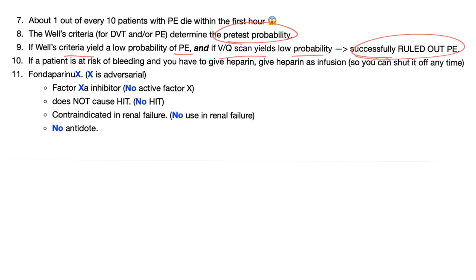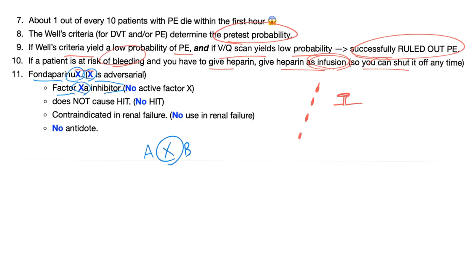If the patient is at risk of bleeding and you want to give heparin, give it as an infusion so you can shut it off at any time. Regarding fondaparinux and the mnemonic of the X: X is adversarial — it's a factor Xa inhibitor. It does not cause HIT. It is contraindicated in renal failure. And it has no antidote.